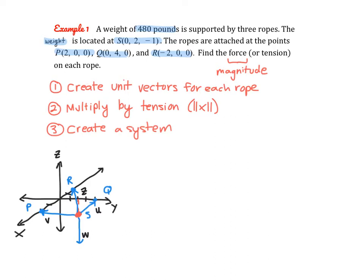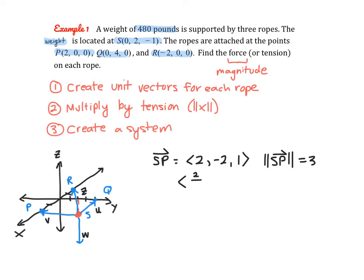First, let's create a unit vector for vector SP. With initial point (0, 2, -1) and terminal point (2, 0, 0), the component vector is (2, -2, 1). The magnitude is the square root of 2² + 2² + 1² = 3. So the unit vector is (2/3, -2/3, 1/3).